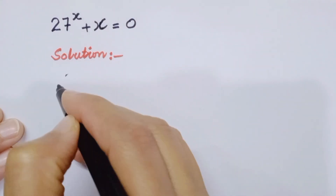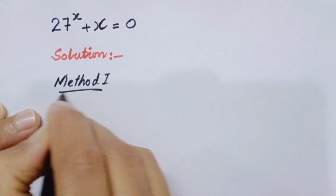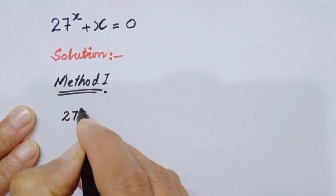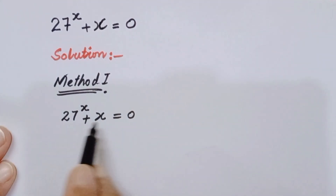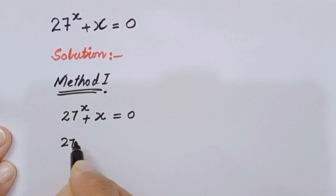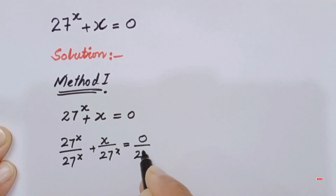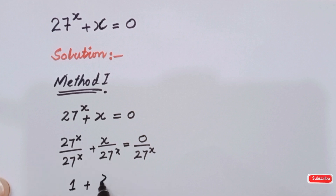Method 1. We will write the given expression: 27 to the power x plus x is equal to 0. Now I will divide both sides of this equation by 27 to the power x. We get 27^x over 27^x plus x over 27^x equals 0 over 27^x. So 27 cancels with 27 and we get 1 plus x over 27^x is equal to 0.